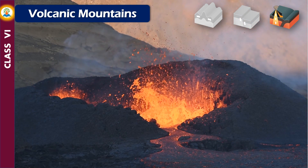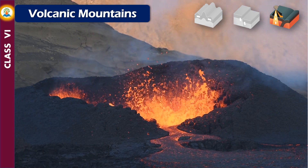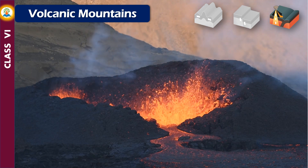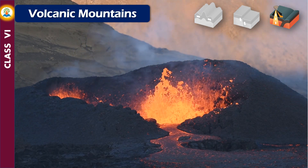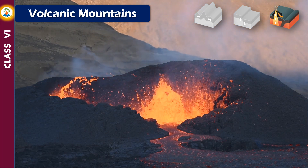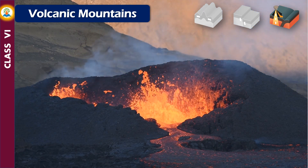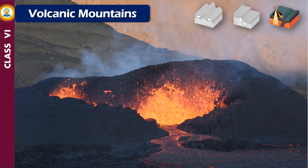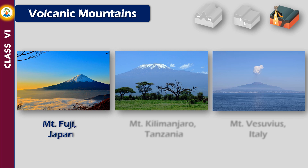During volcanic activity, hot molten lava together with ash, cinder, and smoke comes out from deep inside the Earth through openings or vents in the crust. When lava reaches the surface it cools down and solidifies, forming a volcanic cone that gradually builds up in size and becomes a mountain. Mount Fuji in Japan, Mount Kilimanjaro in Tanzania, and Mount Vesuvius in Italy are examples of volcanic mountains.